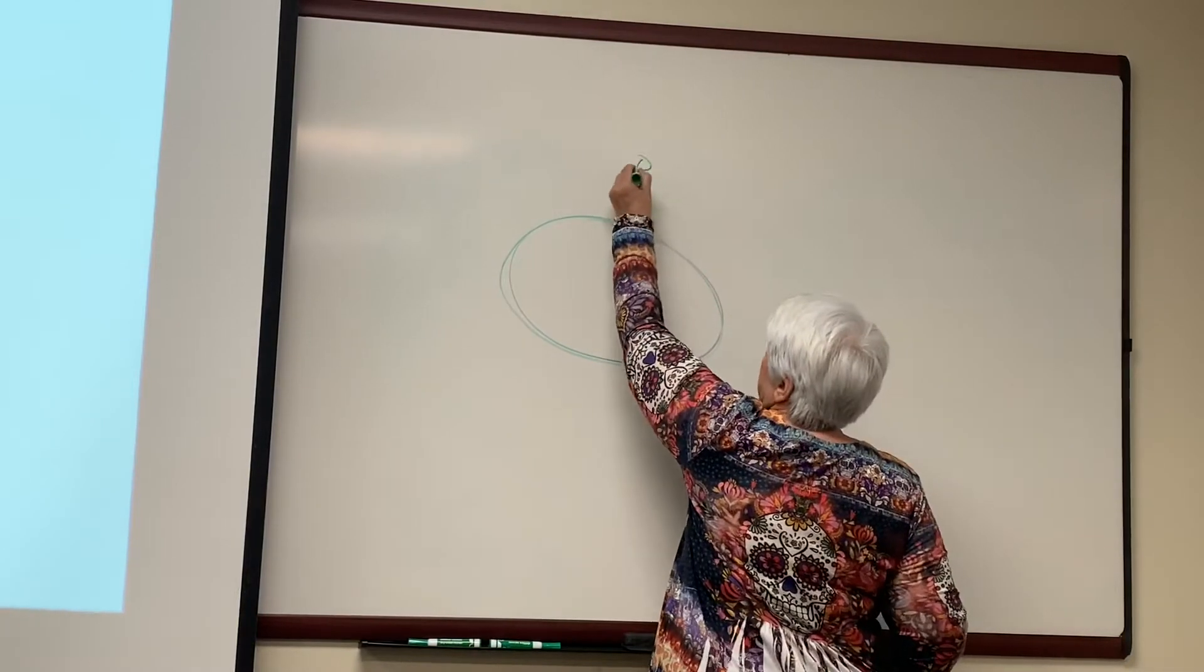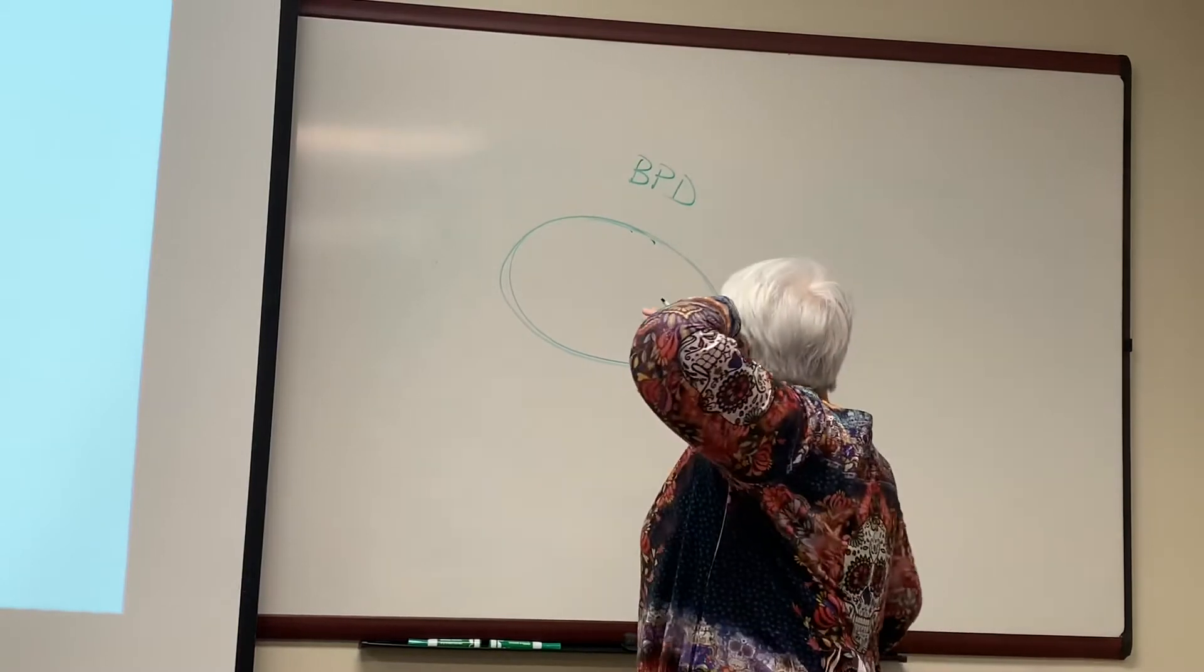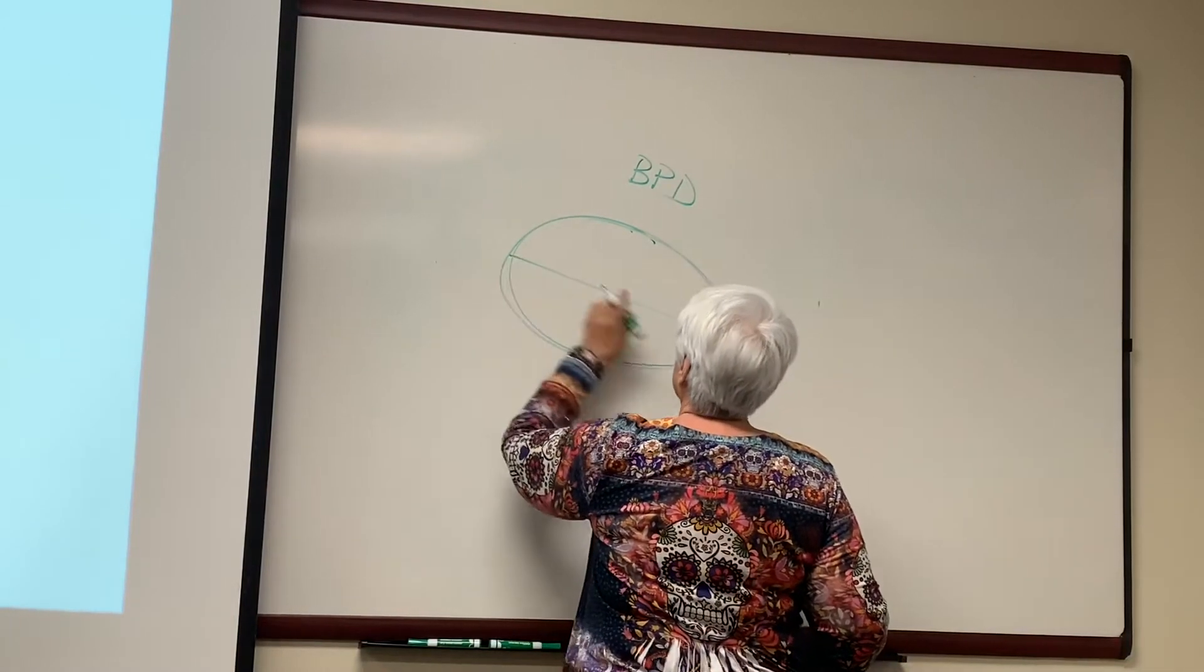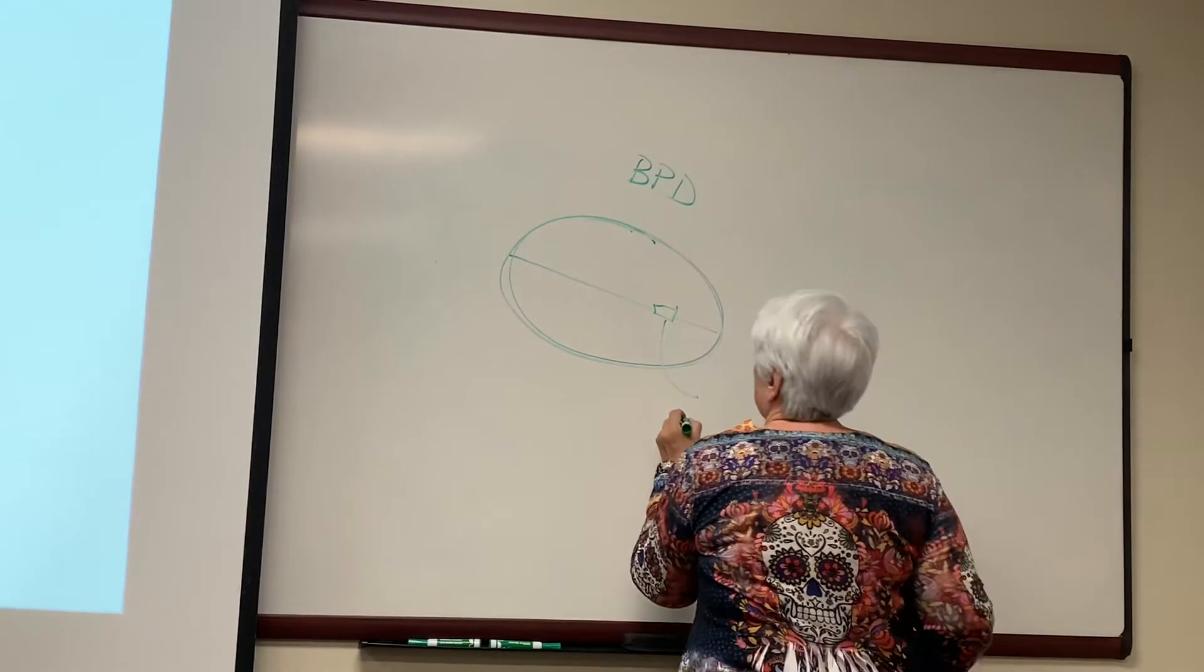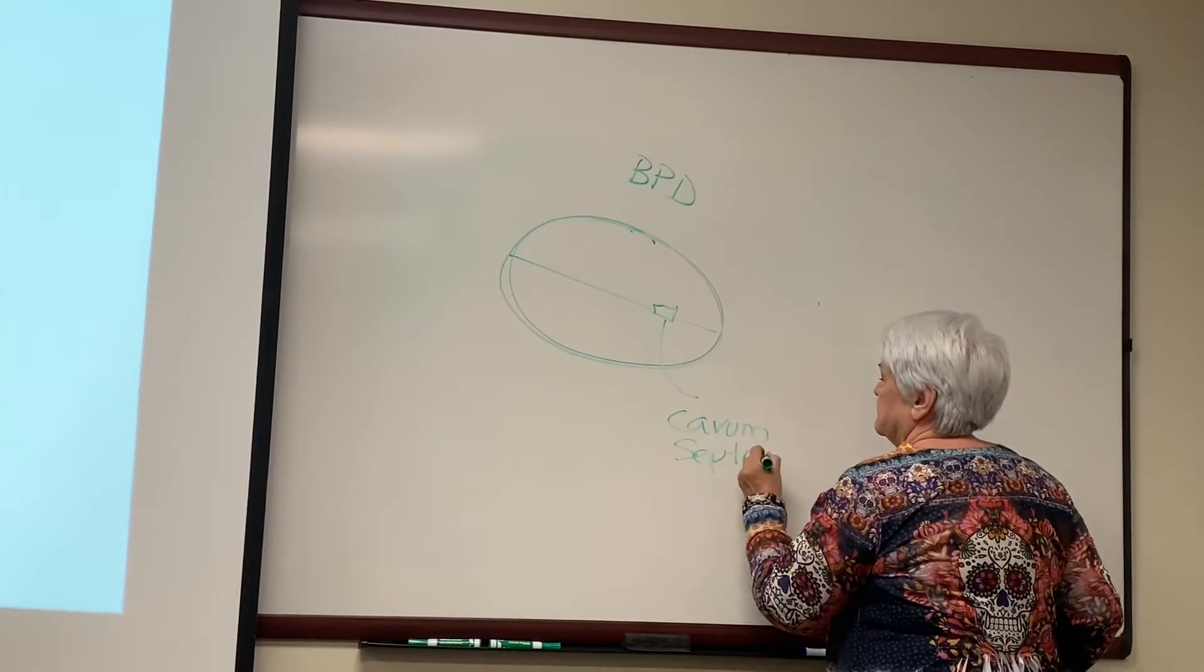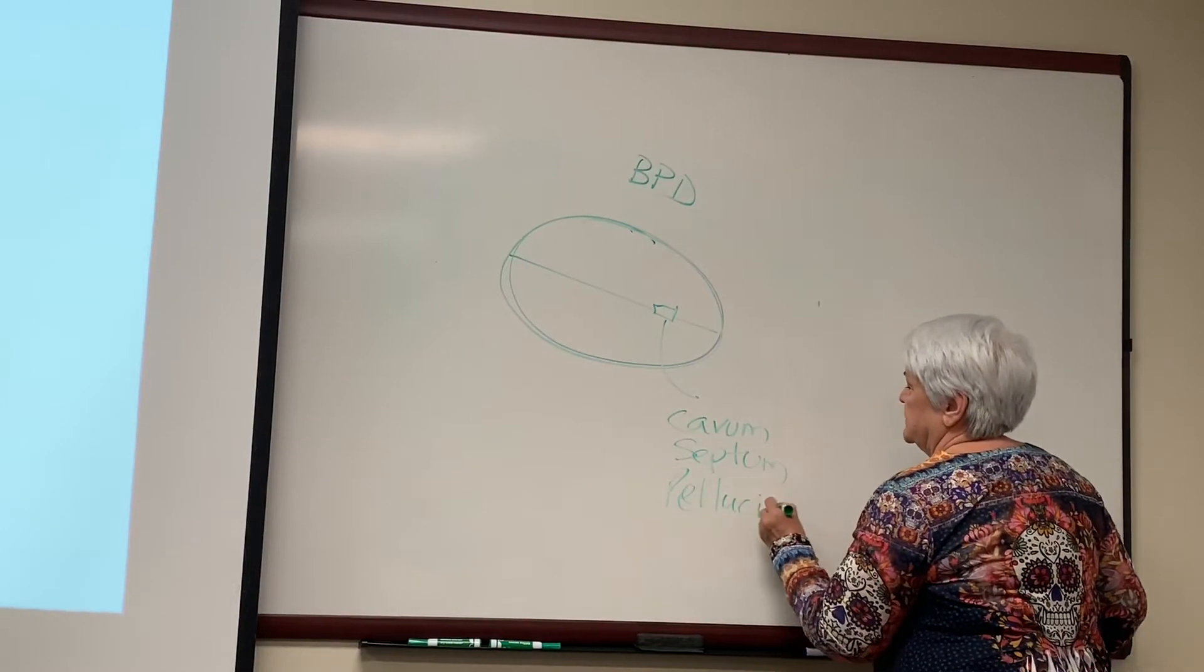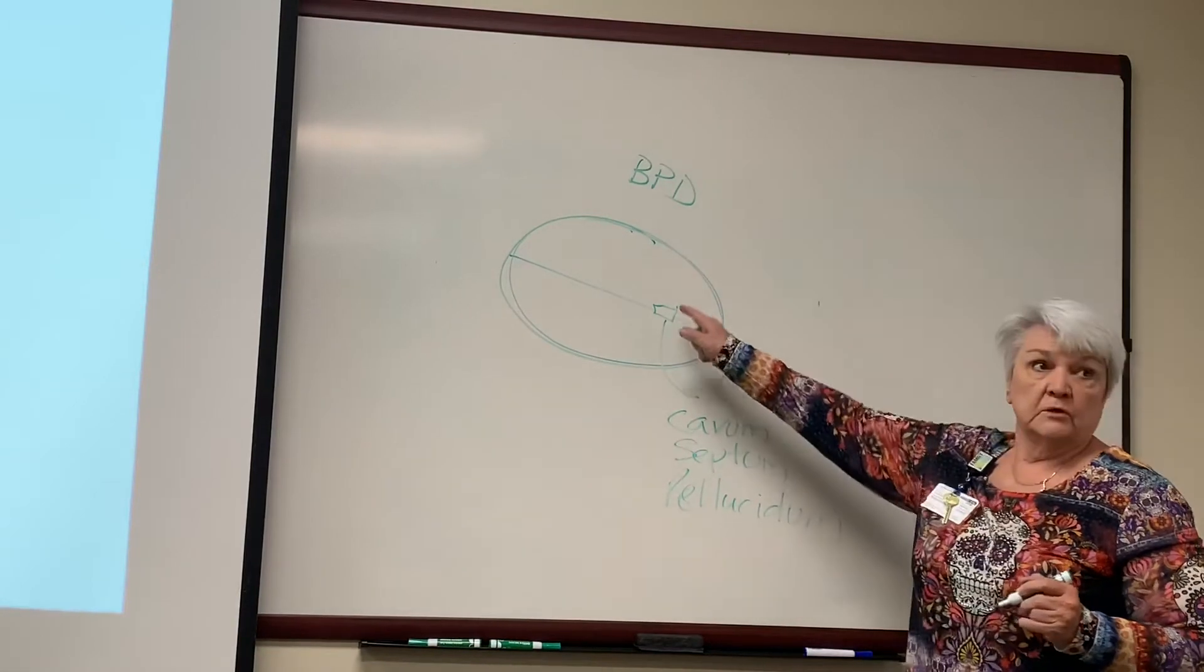So this is my BPD because we're hitting the head at like an axial angle. We're hitting the head at this angle. This is called my falx. Inside my falx, I'm going to have what we call the cavum septum pellucidae. I'm sure that's misspelled. It's like a little rectangle.